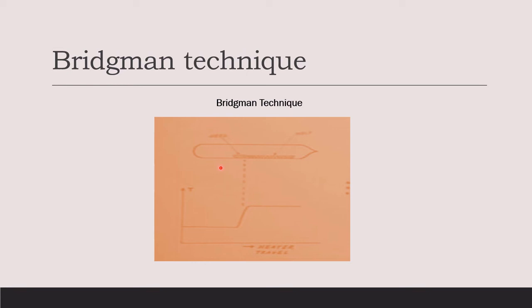This is all about the Bridgman technique, where we need a quartz ampoule and a quartz boat — both of which are readily available. We have to evacuate the ampoule after placing the charge and the seed crystal in it, and have a good furnace with an accurate temperature profile. There must be some catch in the Bridgman technique, which we will discuss in the next class.